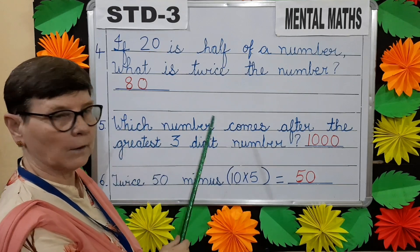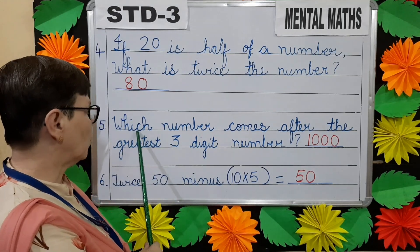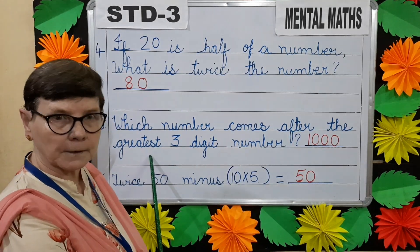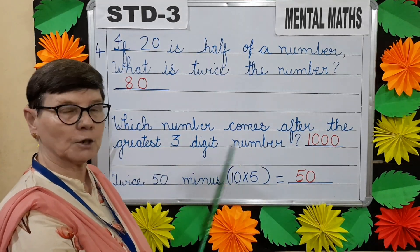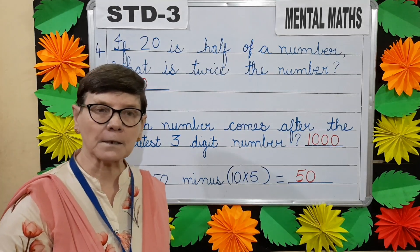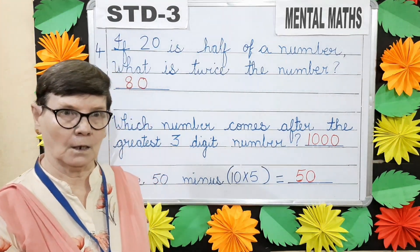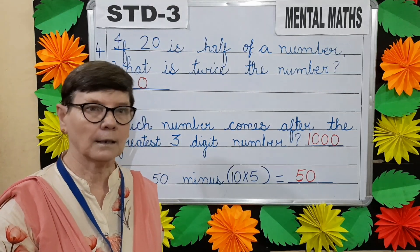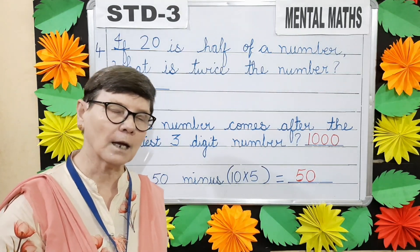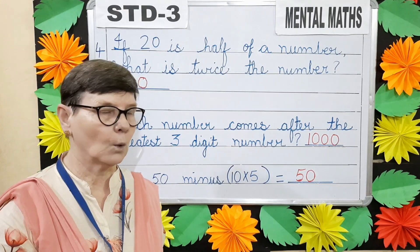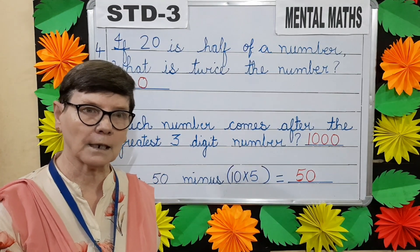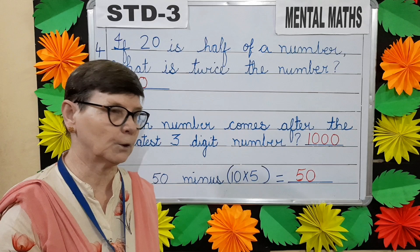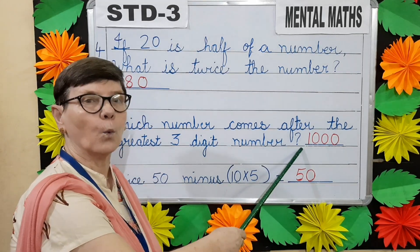Question number five. Which number comes after the greatest three-digit number? Greatest means the biggest. You know which is the greatest three-digit number? Nine hundred and ninety-nine. What comes after nine hundred and ninety-nine? One thousand. Good. So we write one thousand.